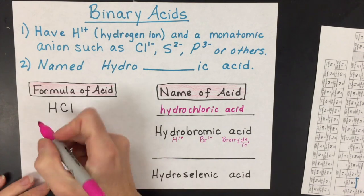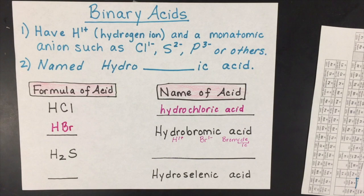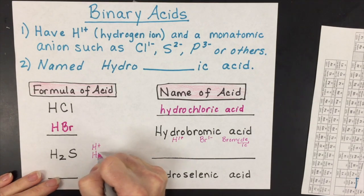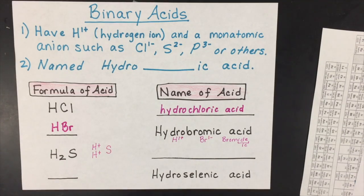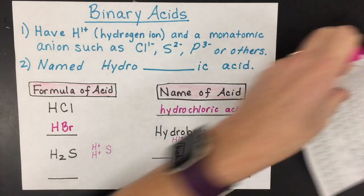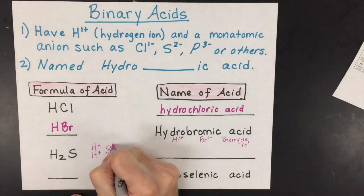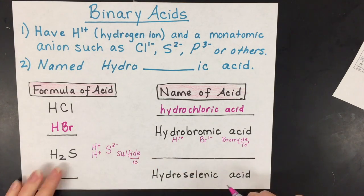The next one has hydrogen ions and the sulfide ion. In this case, you have two hydrogen ions—that's what the subscript two means—and you have sulfur as a sulfide ion. Sulfur, based off of its family position on the periodic table or an ion sheet, is predicted to be a two minus, and that means it's called sulfide. Again, we're going to change the -ide to -ic and then add the prefix hydro.